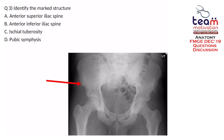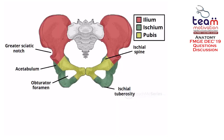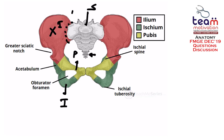The next question involves radiological anatomy. We have to identify a marked structure in a given hip bone/pelvic region image. Options are anterior superior iliac spine, anterior inferior iliac spine, ischial tuberosity, and pubic symphysis. The hip bone is made by the union of three bones: ilium (red), pubic bone (yellow), and ischium (green). The sacroiliac joint connects the sacrum and ilium; the pubic symphysis joins the two pubic bones.